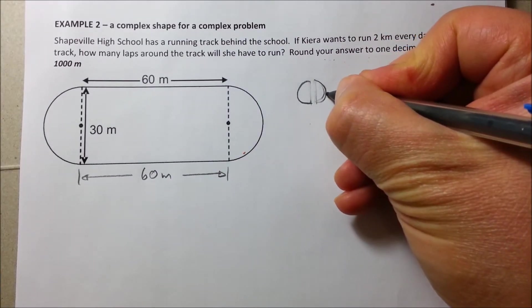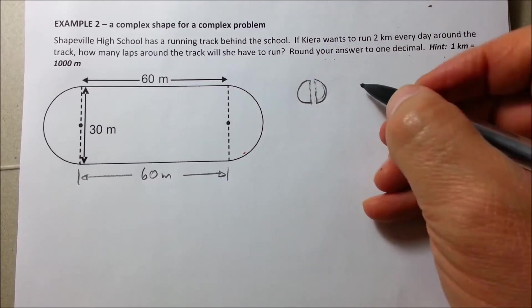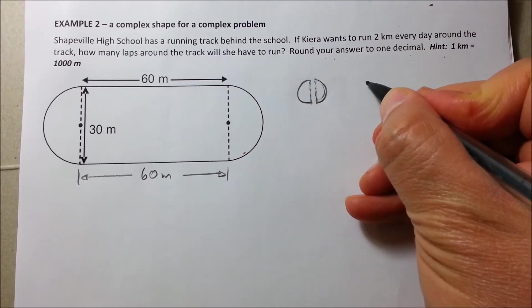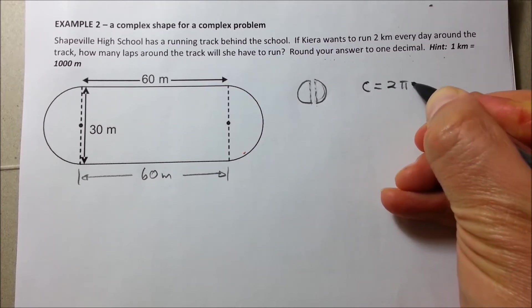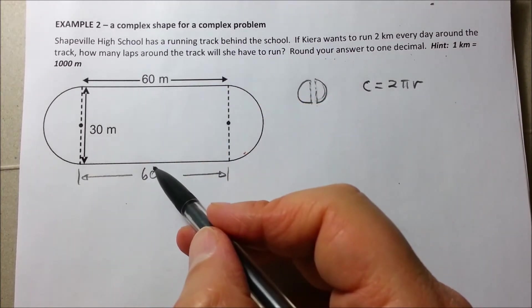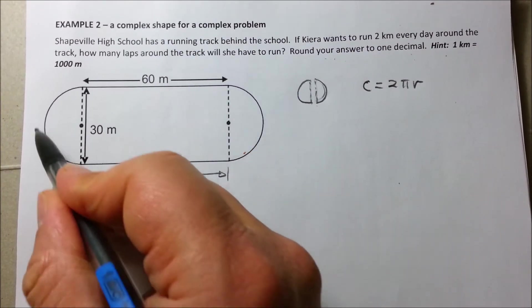So, let's do that. Now, what's the formula for the circumference of a circle? Well, C equals 2πr. So, so far we have these two lengths which is 120 meters. Now, how long is this and this together?